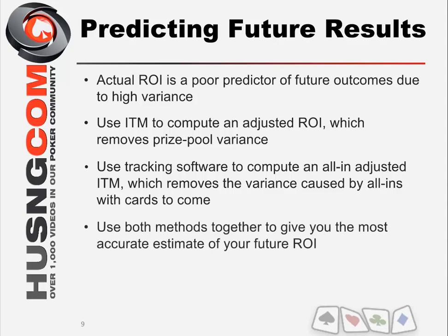The trick to getting the most out of this to predict your future results is to use both methods together — that'll give you the best estimate of your future ROI available right now. Maybe someday they'll come up with new ways of removing elements of variance in poker, but for now using these two methods will give you the best predictor of your future ROI. It'll still be susceptible to variance.